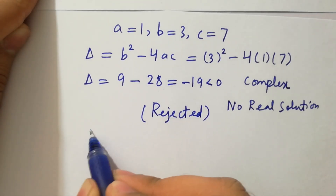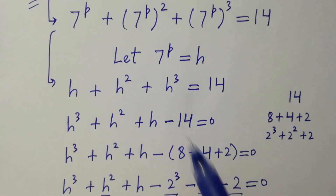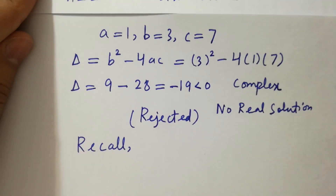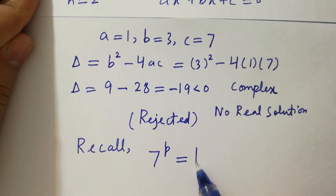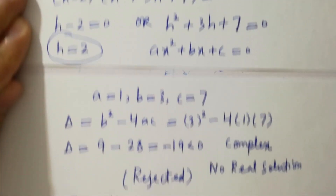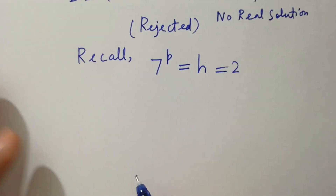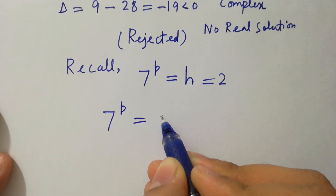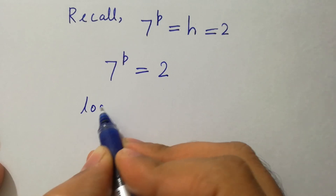The discriminant is minus 19, which gives complex solutions — no real solution — so this case is rejected. Recalling 7 to the power p equal to h, and h equal to 2, so 7 to the power p equal to 2. To find p, take log on both sides.